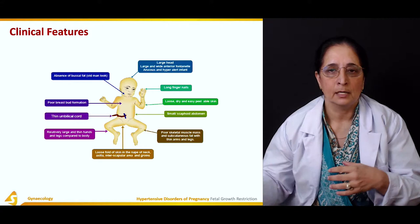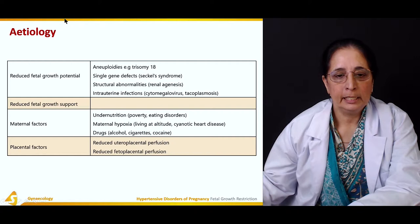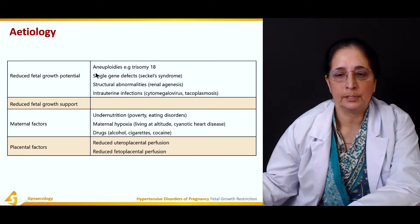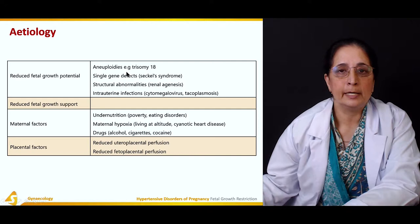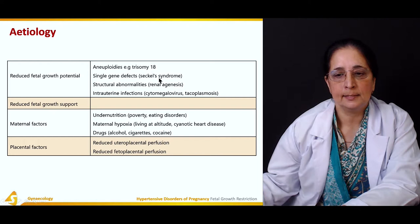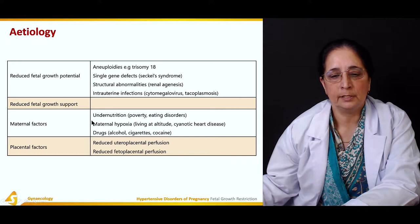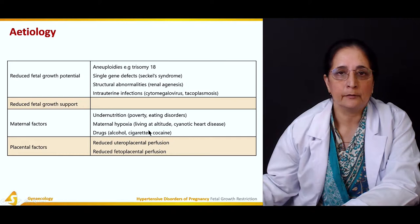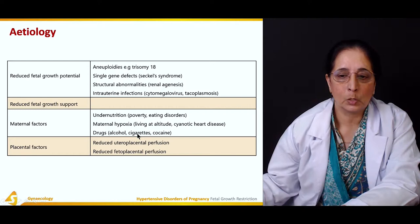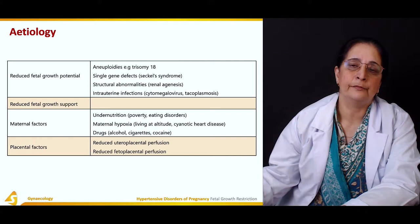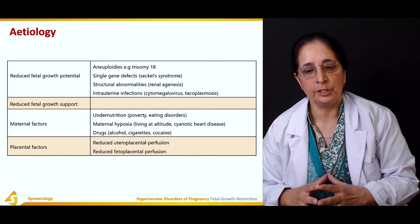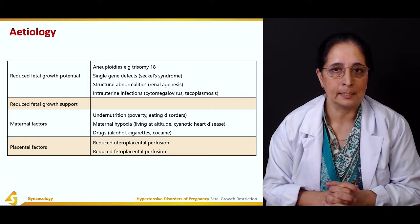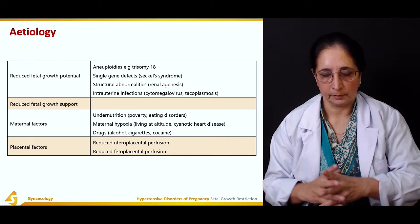Fetal growth restriction can cause complications affecting multiple structures. Etiology includes reduced fetal growth potential due to congenital abnormalities such as aneuploidy, trisomy 18, single gene defects, sickle syndrome, structural abnormalities, renal agenesis, and intrauterine infections. Maternal factors include undernutrition, hypoxia, and drugs like alcohol, cigarettes, and cocaine. Placental factors involve decreased utero-placental or feto-placental perfusion, which can lead to intrauterine growth restriction.